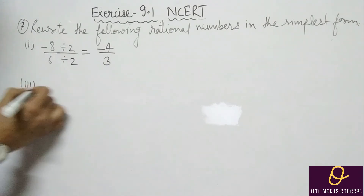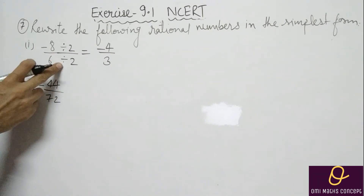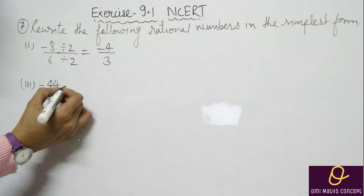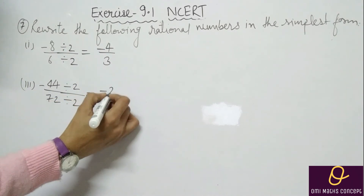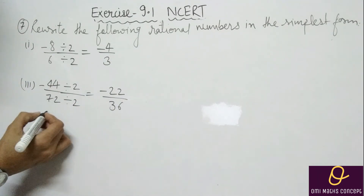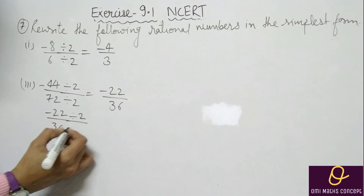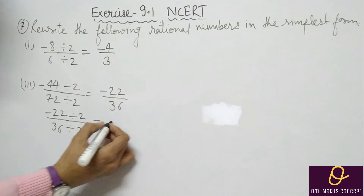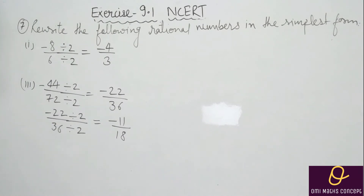Ek part aur bata jaati hoon — minus 44 by 72. Agar aisa nahin karna chahte, aapko aisi cut karna aata hai toh usse bhi kar sakte ho. Pehle 2 se divide kiya kyunki dono number 2 se divide ho jaayenge — then we will get minus 22 by 36. Again yeh divide ho raha hai — minus 22 by 36 divide by 2. Agar aapko direct pata chal raha hai ki yeh 4 se divide ho raha hai toh aap direct 4 se bhi kar sakte ho — minus 11 by 18. This is simplest form.